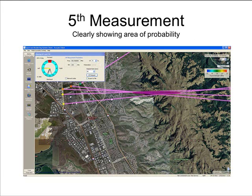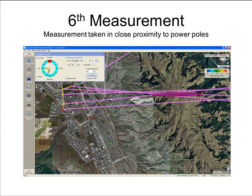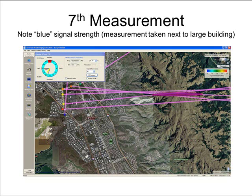The fifth measurement again clearly shows a strong indication of the area from which the target emitter is transmitting, and with each successive measurement the error ellipse is getting smaller. The sixth measurement agrees with the direction to the emitter but is a little off compared to previous measurements — this was due to the measurement being taken whilst the vehicle was crossing a freeway where there are a large number of light poles and traffic lights. The seventh measurement is totally off compared to all previous measurements, because it was taken whilst the vehicle was next to a large hotel located between the vehicle and the target emitter.